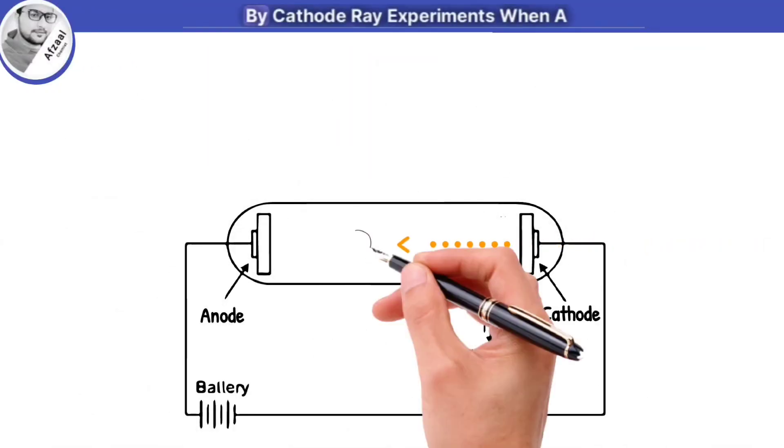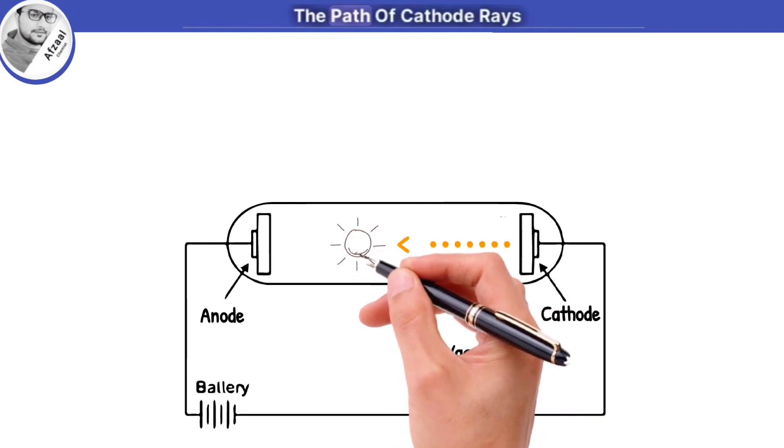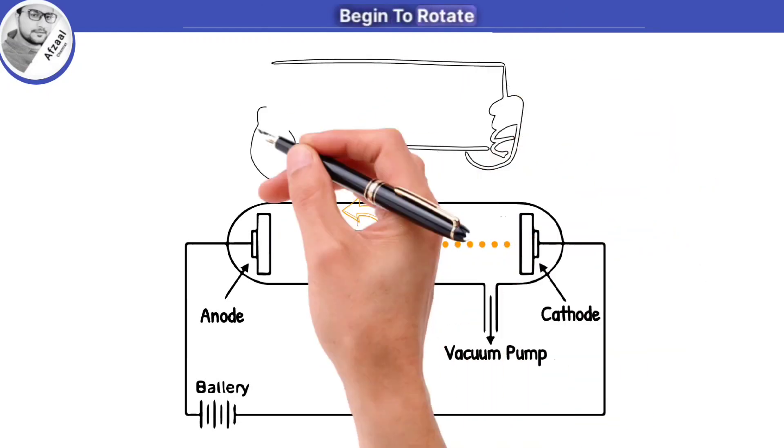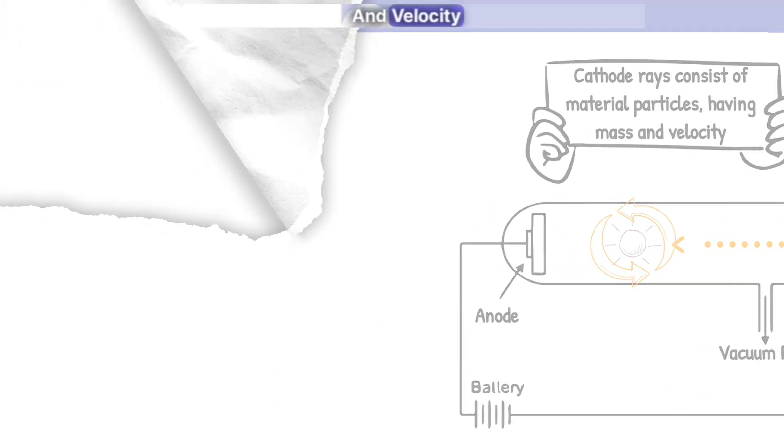Another observation made by cathode ray experiments: when a light paddle wheel is placed in the path of cathode rays, the blades of the paddle wheel begin to rotate. It shows that cathode rays consist of material particles having mass and velocity.